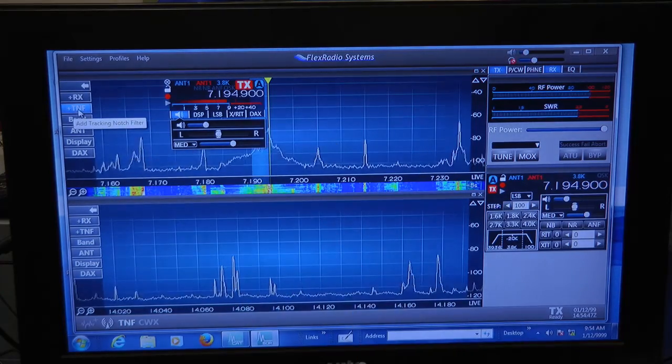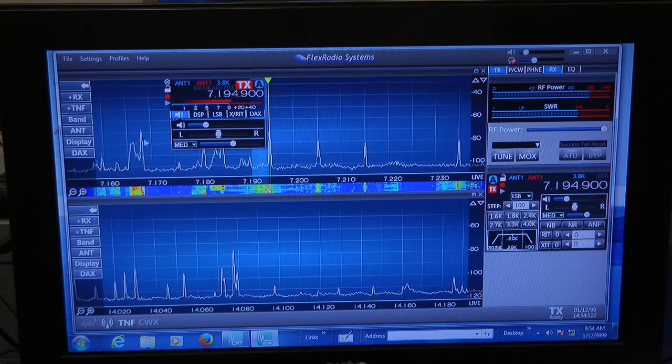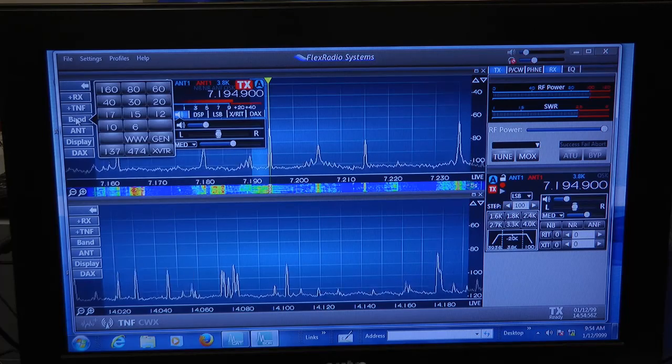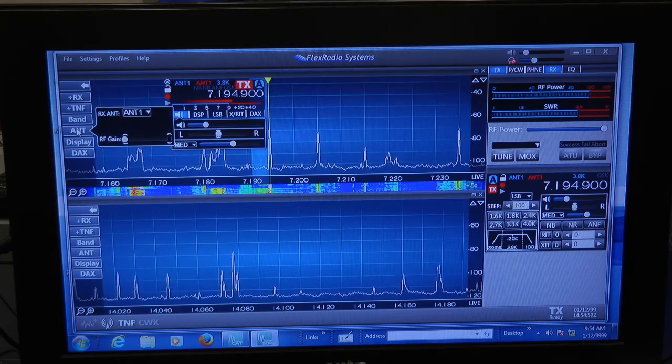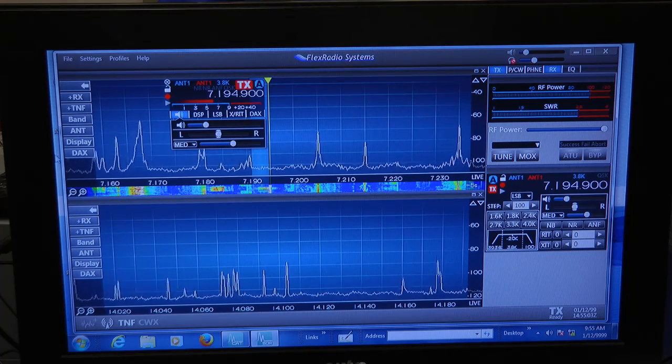The tracking notch filter. You have a heterodyne, click on the heterodyne. And as you tune around the band, it'll always remember to take that heterodyne out. Change the bands here, change the antenna, adjust the display, and of course your digital audio communications over here.